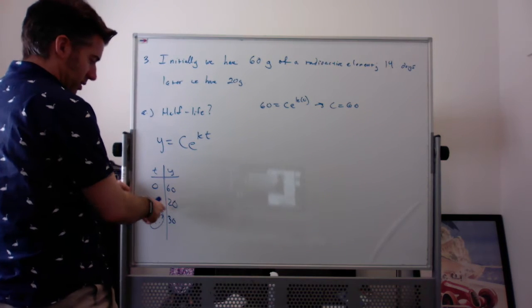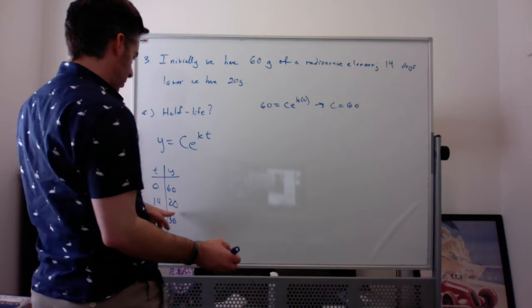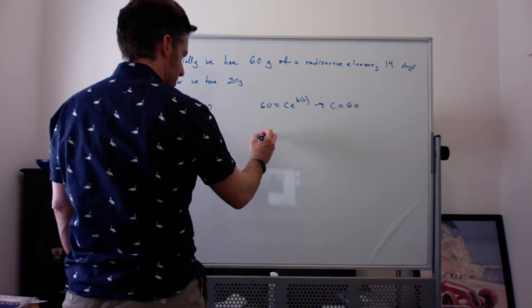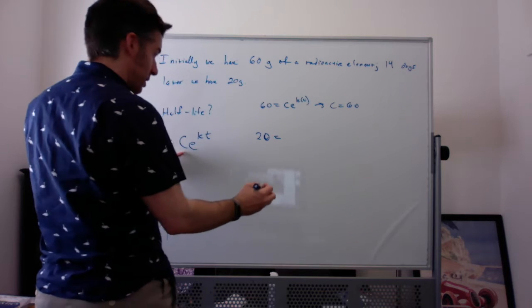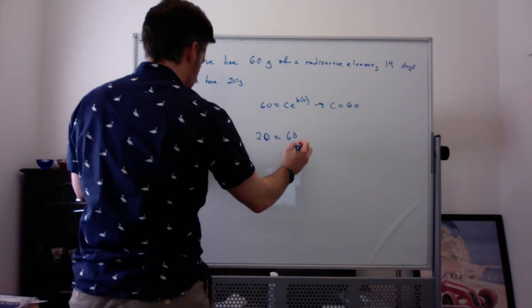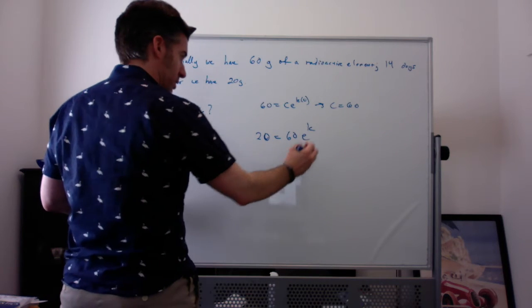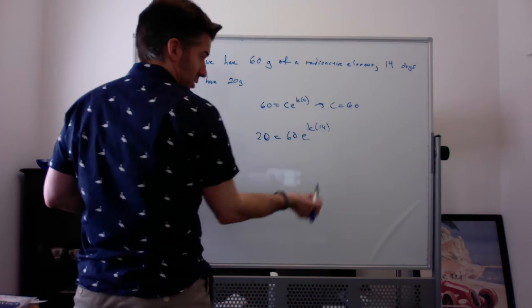Plug in the other piece of information I know both parts for, I'm plugging in y is 20 and t is 14. So I've got y is 20 equals, and then c is 60, and I've got e^(k times t), which is 14. And then I'm going to solve for k.